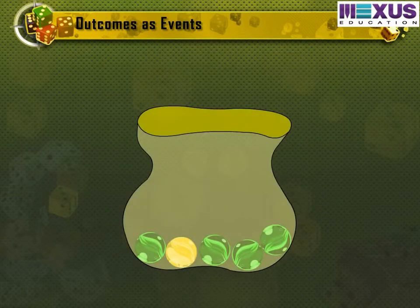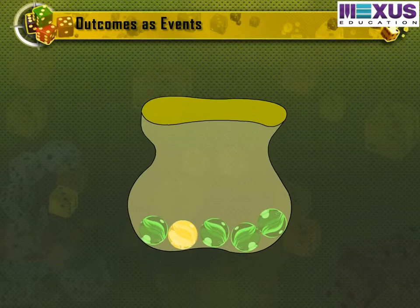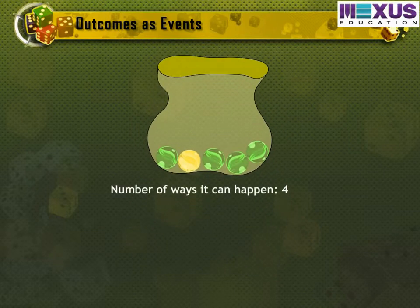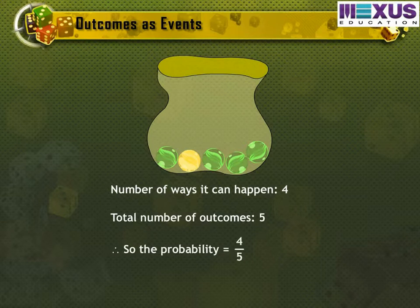Given there are five marbles in a bag — four are green and one is yellow — what is the probability that a green marble gets picked? The number of ways it can happen is four, as there are four green marbles. The total number of outcomes is five, as there are five marbles in total. So the probability would be four divided by five, which equals 0.8.